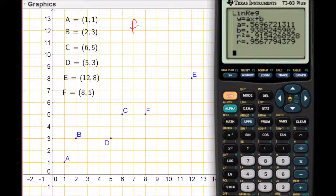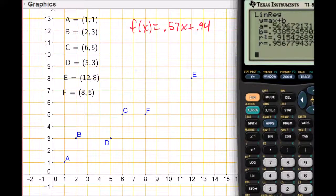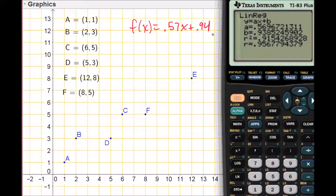In fact, I want to write those down before we move on. The line of best fit, I'm going to write using function notation, f(x) equals 0.57, times x, plus 0.94. And let's also write down R equals 0.96.